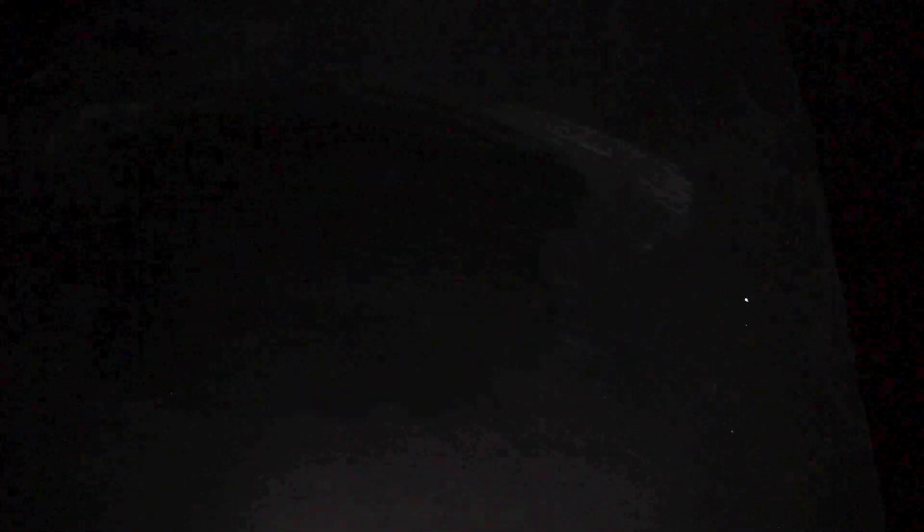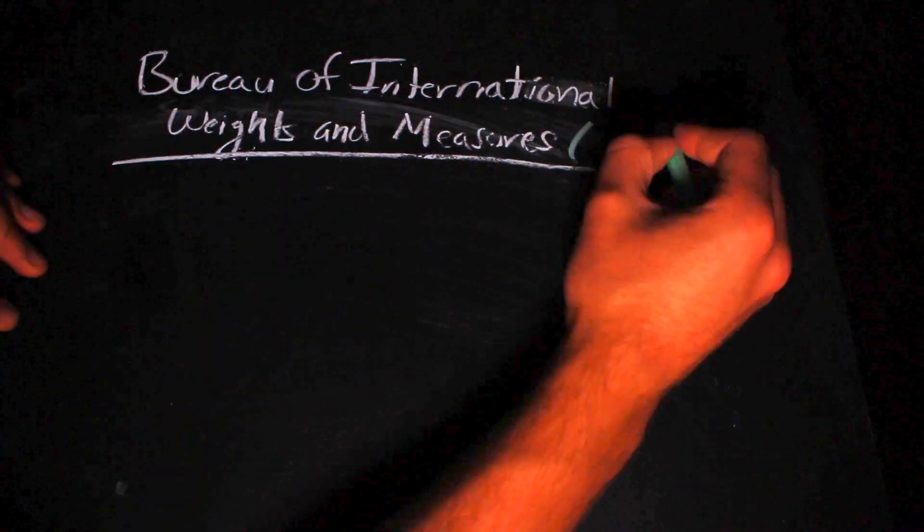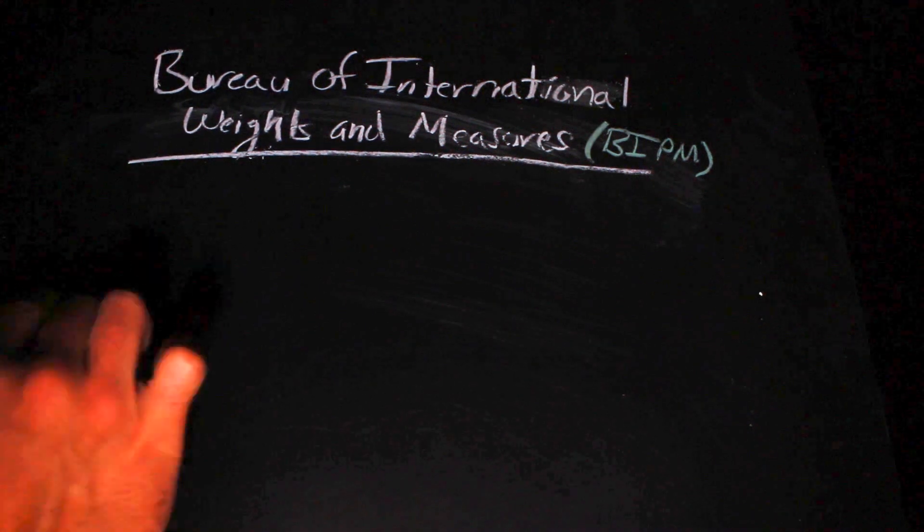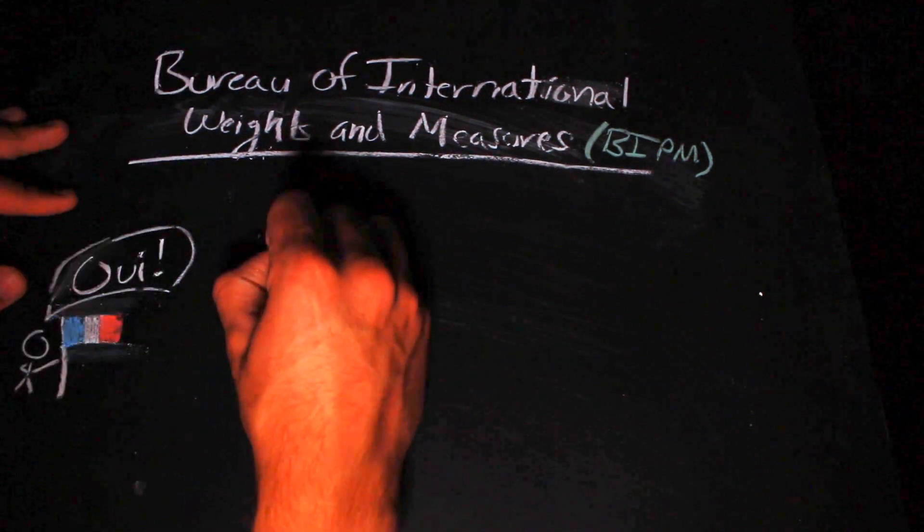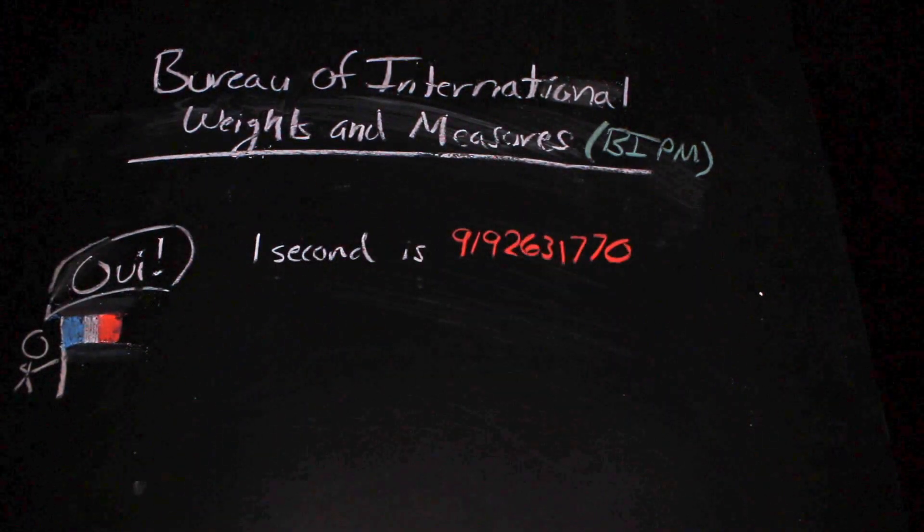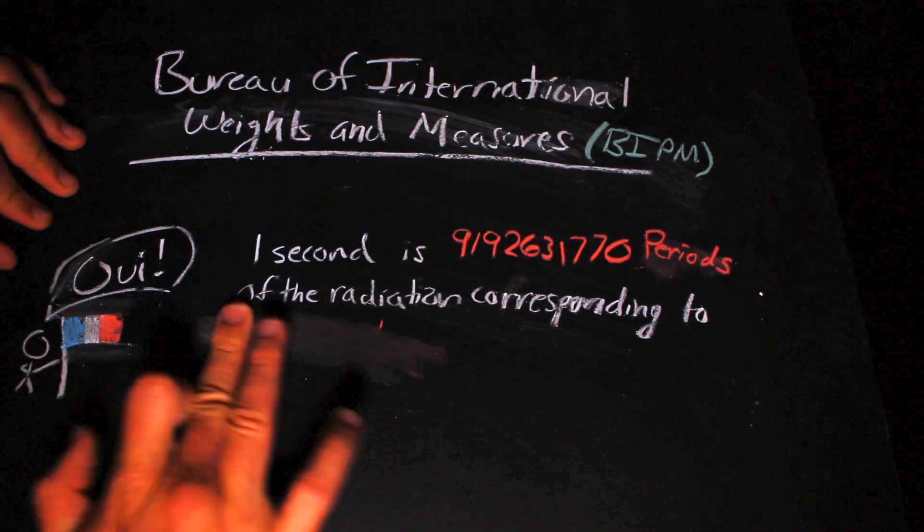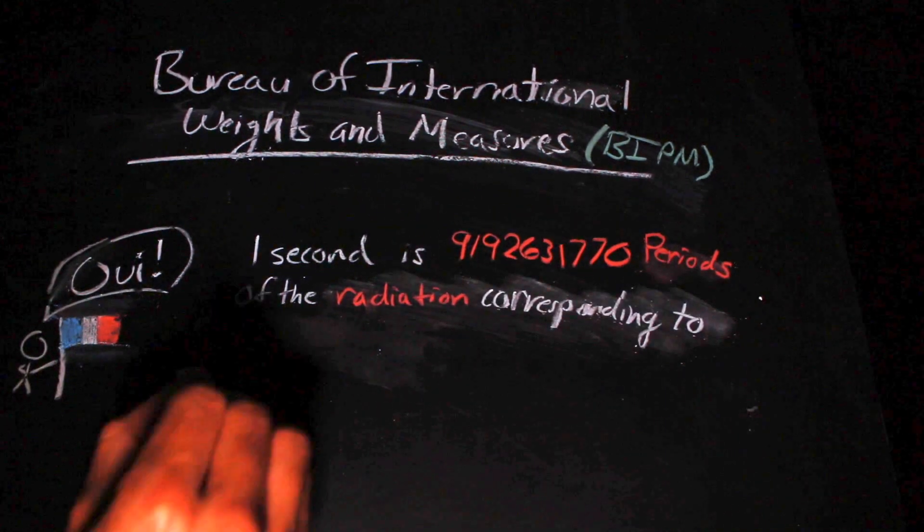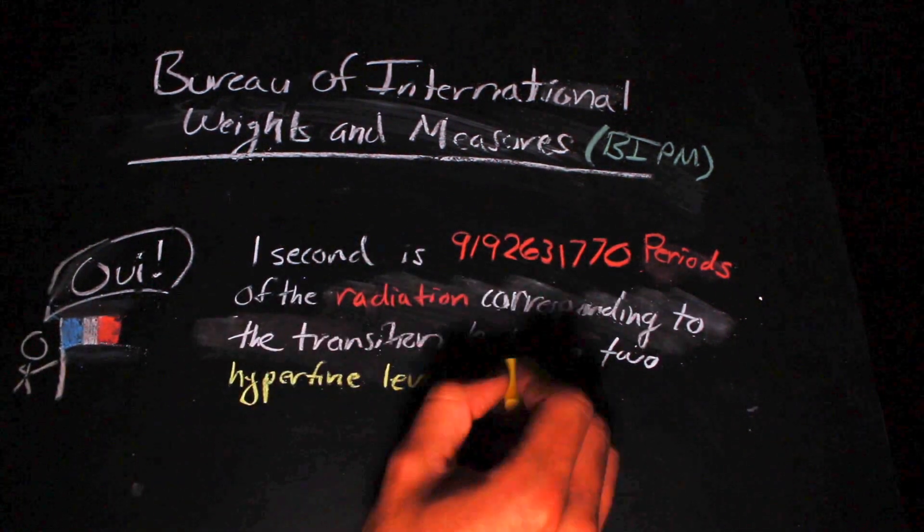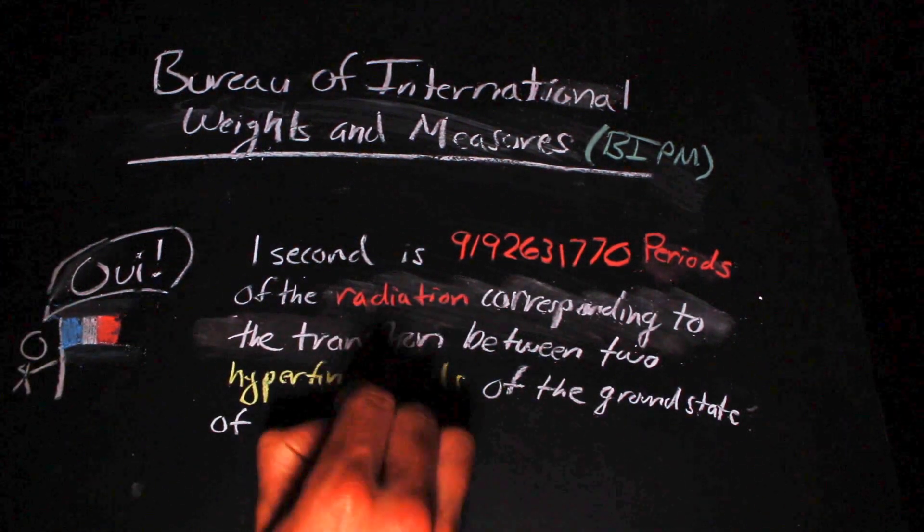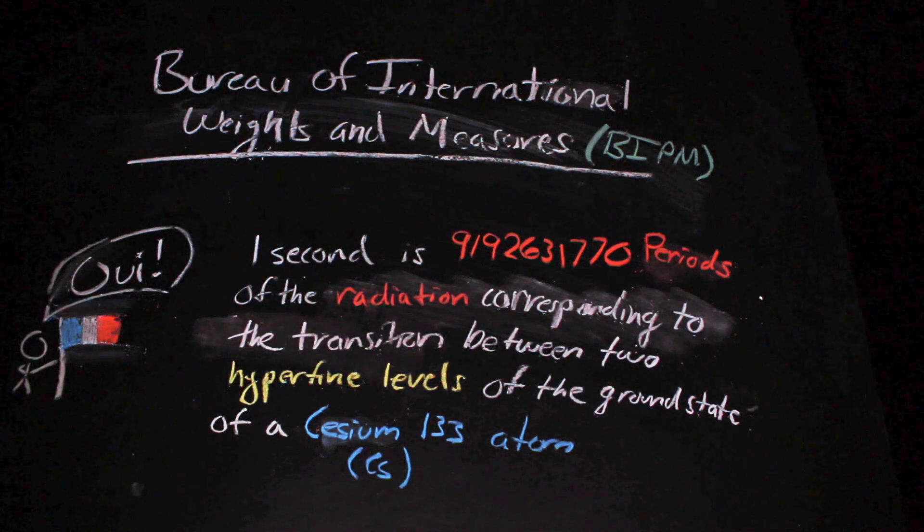According to the Bureau of International Weights and Measures, or BIPM—yep, still French—the second is now defined as 9,192,631,770 periods of the radiation corresponding to the transition between two hyperfine levels of the ground state of the cesium-133 atom.